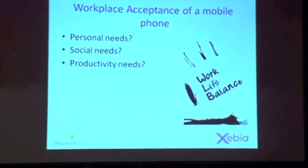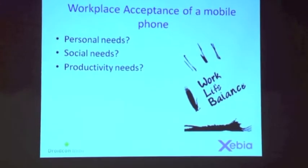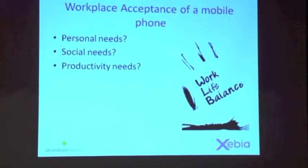There is a term called workplace acceptance. At the workplace, every employee has personal needs — talking on the phone, watching videos. Social needs: Twitter, Facebook, LinkedIn through mobiles. And then productivity needs related to work, to make a work-life balance.